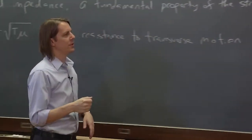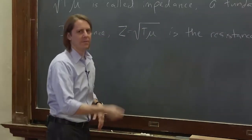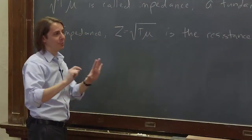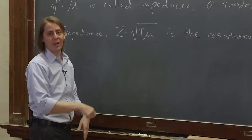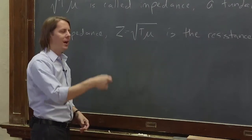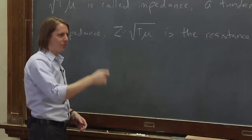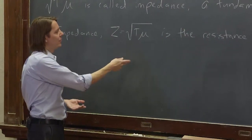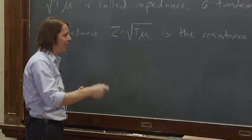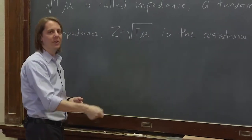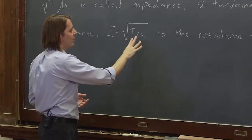If I hold the end of a string and launch a wave, I have to do work on the string — I have to apply a force over a distance as I move it, because a wave is a propagation of energy through a medium, so that energy has to come from somewhere. The force that I apply is proportional to the velocity that I move the end of the string, and this is the proportionality constant.